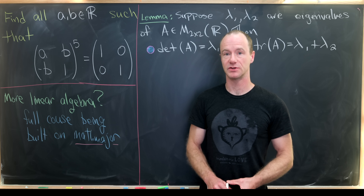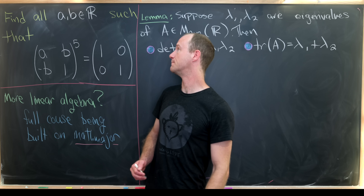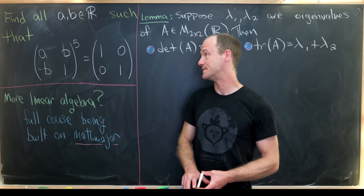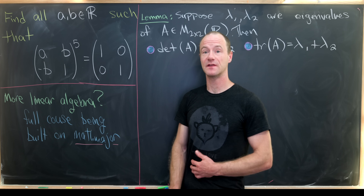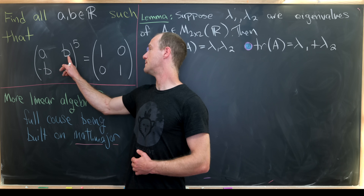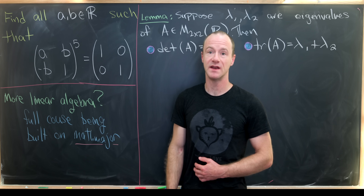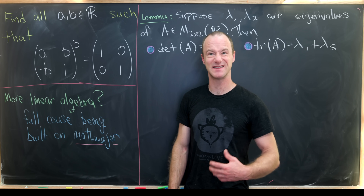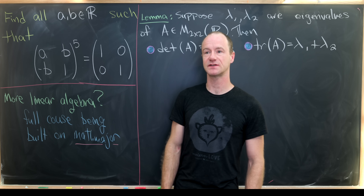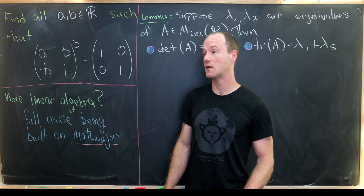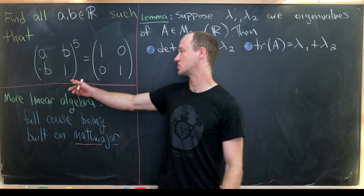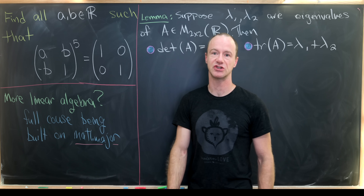Today I've got a nice linear algebra problem to show you. Our goal is to find all real numbers A and B satisfying the following matrix equation: AB minus B1 to the fifth power — that's the fifth power of that matrix — equals the identity matrix. You can think about this as finding all fifth roots of the identity matrix subject to this constraint, where our matrix has the following shape.